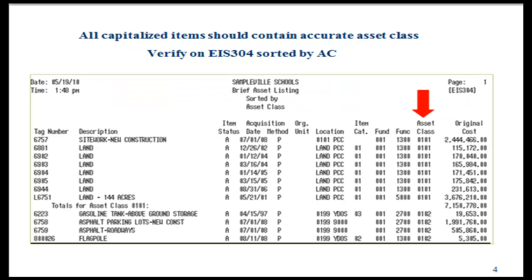All capitalized items should contain a valid asset class. You may check this by running an EIS-304 report on all capitalized assets sorted by asset class. Please review the asset class column to make sure each tag contains a proper asset class. An item amount may be excluded or an error generated if there is no asset class or an invalid asset class for that tag.